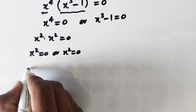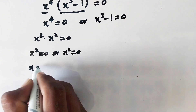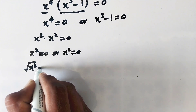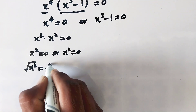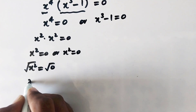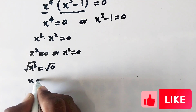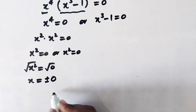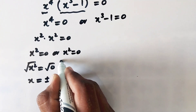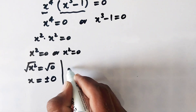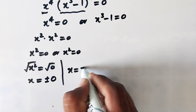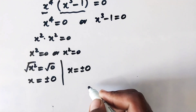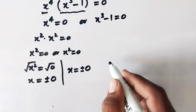Taking the square root on both sides, we get the square root of x squared equals the square root of 0, so x equals 0, that is x equals plus or minus 0. The same result applies from both factors, so x equals plus or minus 0.